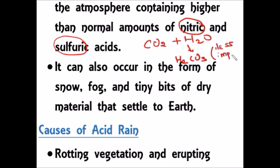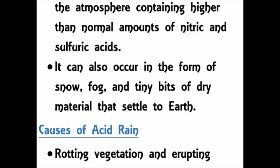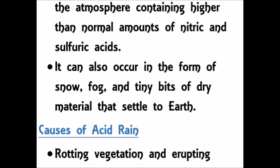Rain water — you may think that acid reaches the earth only in the rain water form, but it is not so. Mostly sulfuric acid and nitric acid reach the earth's surface in water form, but also in other forms like snow, fog, and tiny bits of dry materials which settle over the earth's surface.